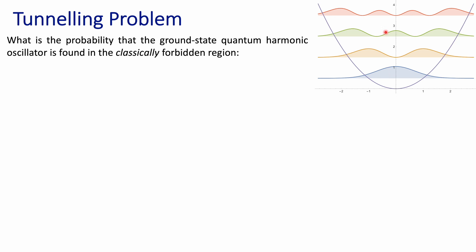Here you have the probability density for the ground state, first excited, second and third excited states for the harmonic oscillator, and this is going to be your classical potential that goes as x squared. These oscillations that we have are always with respect to the equilibrium position. Positive values mean that the bond is stretching and negative values mean that the bond is compressing — positive or negative with respect to the equilibrium position of that vibrating bond.